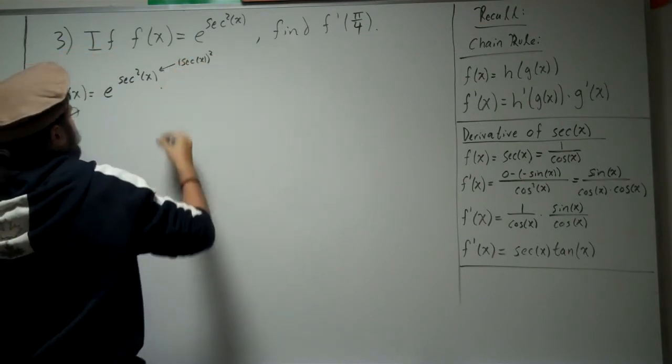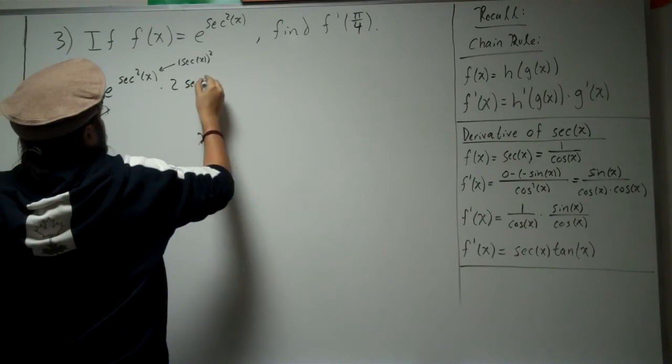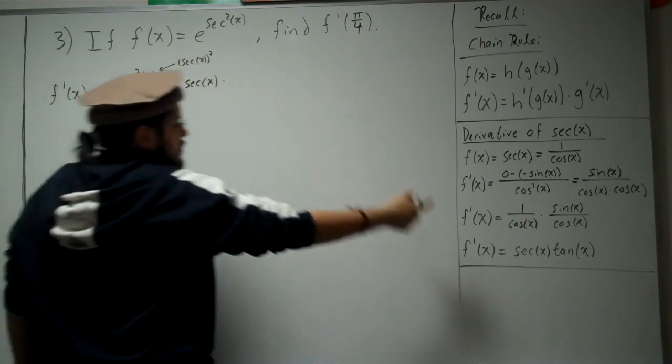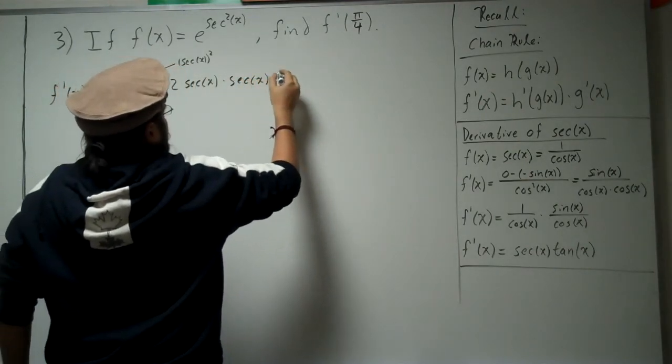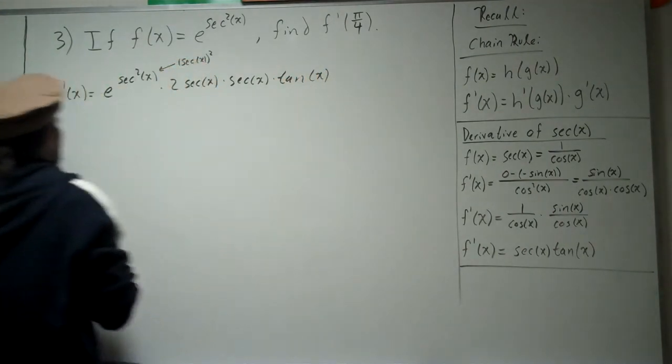So then you're going to have to bring the 2 down. So that's 2 secant x, times the derivative of secant x, which we derived as secant tangent. Secant tangent. Okay. So, so far, so good.